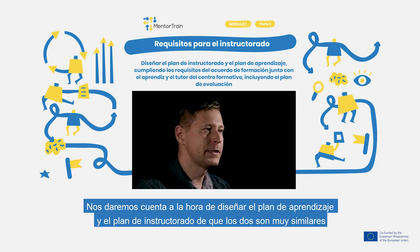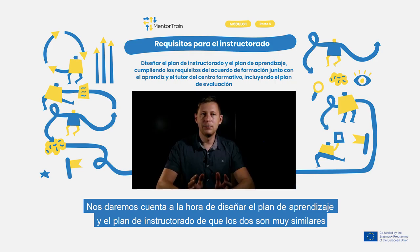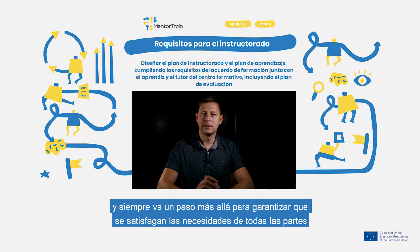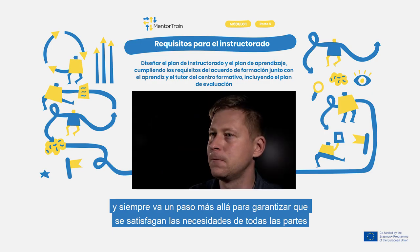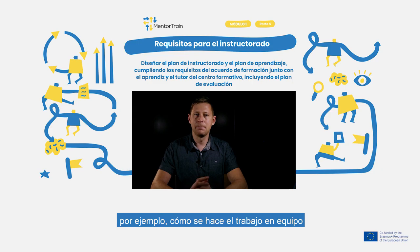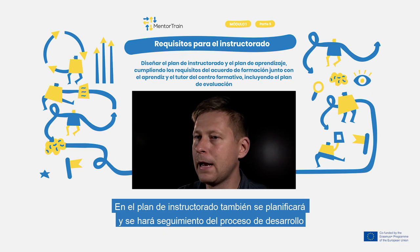When we prepare our mentoring plan and apprenticeship plan, we will see that both documents are similar. The main difference is that the mentoring plan is looking at the apprenticeship from the side of the company and is planned always one step ahead, to be sure that we fulfill the expectations of all parties. In the mentoring plan we clearly write down the learning outcomes in connection with different tasks, for example how we will develop teamwork capabilities, and we are planning and monitoring the development process.